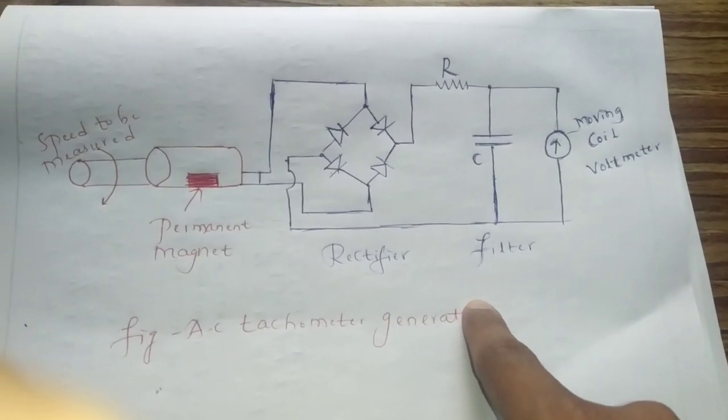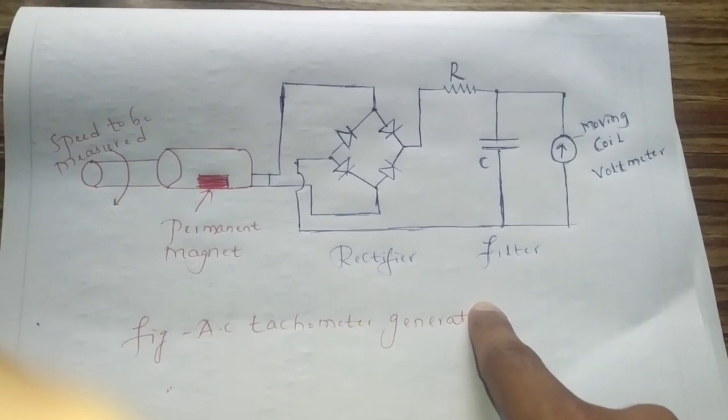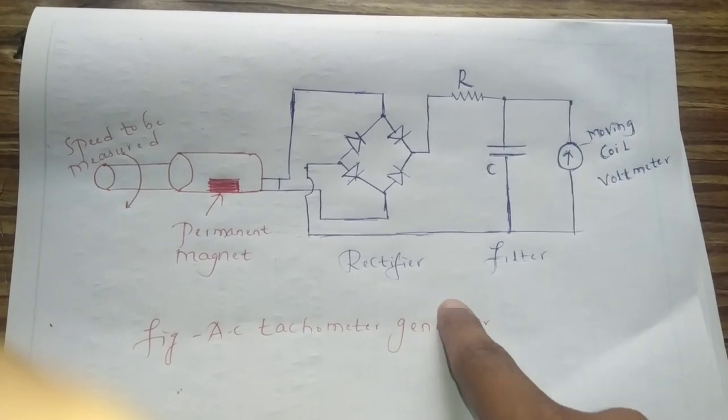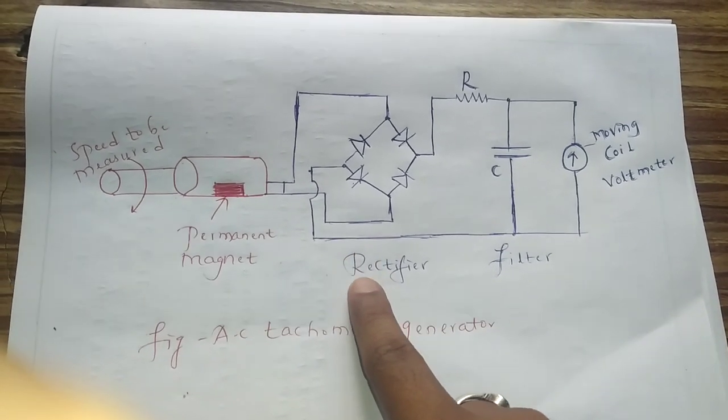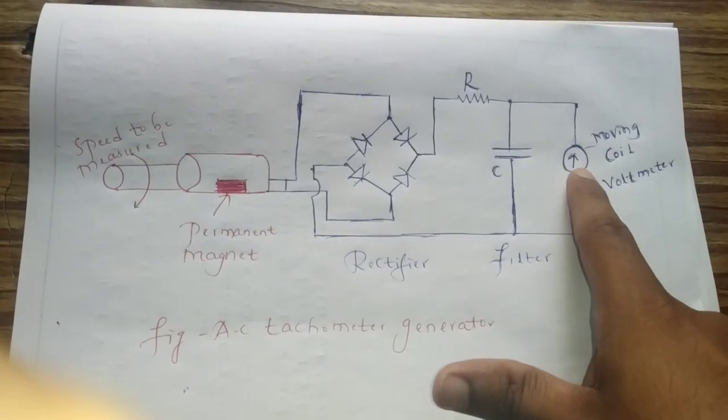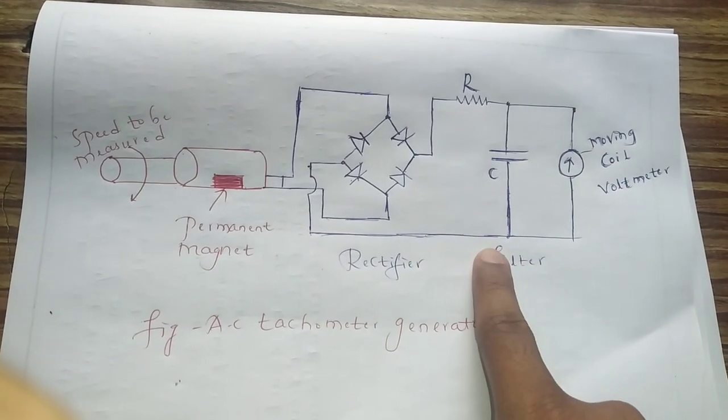First, it consists of rotating magnet, coil on the stator, rectifier, filter and moving coil voltmeter as shown in the figure.